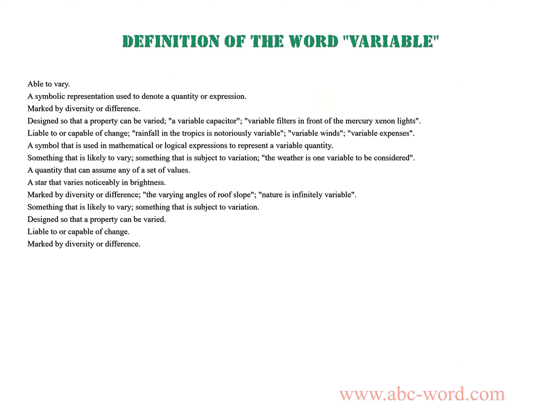Hello! After watching this video, you will find out what the word variable means. Able to vary. A symbolic representation used to denote a quantity or expression. Marked by diversity or difference. Designed so that a property can be varied — for example, a variable capacitor.